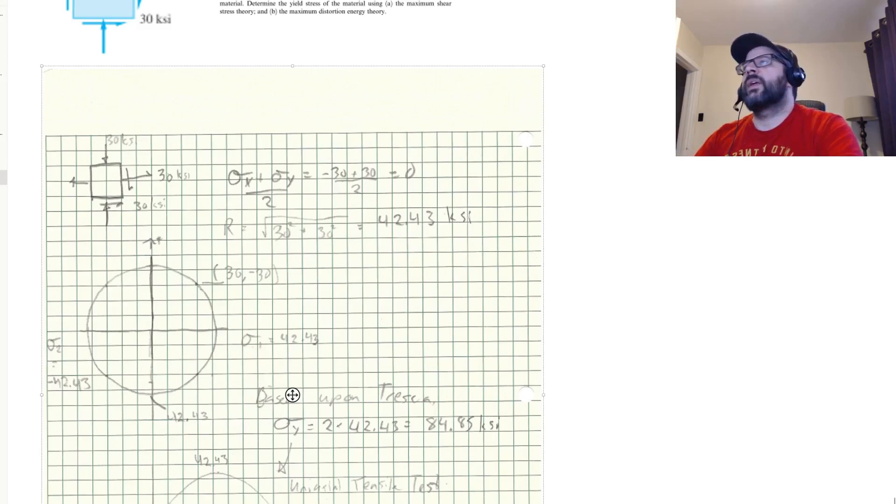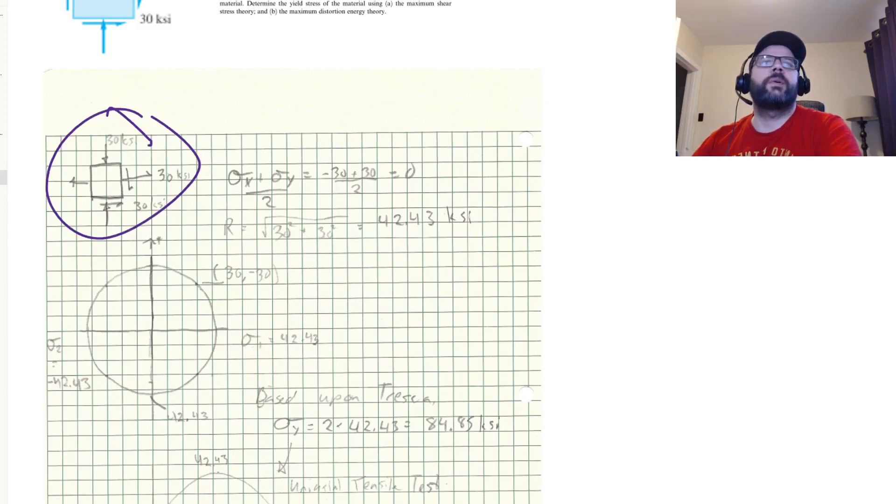We need to find out what the average stress is. So sigma x plus sigma y divided by 2. Negative 30 plus 30 divided by 2 is 0. So the origin of our Mohr's circle here is at 0.